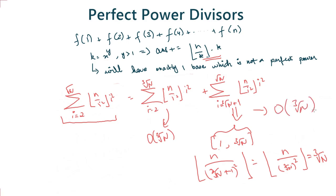We have now found the answer for even-powered perfect powers in O(∛n). I hope you've understood how this works. If you have, please don't forget to like this video and subscribe to my channel, Fluent Algorithms. See you in the next video.